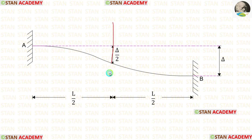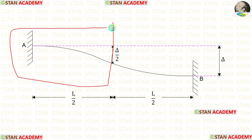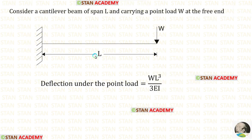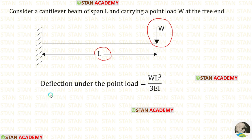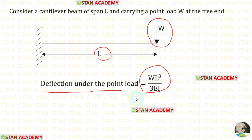Let us take the left part of the fixed beam and assume that it is a cantilever beam. Let us consider a cantilever beam of span L carrying a point load W at the free end. The deflection under the point load is WL³/3EI. We are going to use this formula to find out the fixed end moment MA.